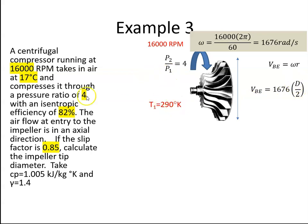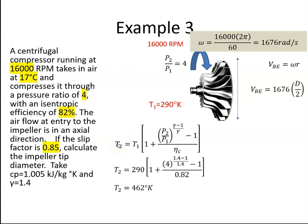I have T1, and I have the pressure ratio, and I have the efficiency of the compressor. So I have all that I need to calculate the output temperature T2, and when I do that T1 being 290, P2 to P1 being 4,